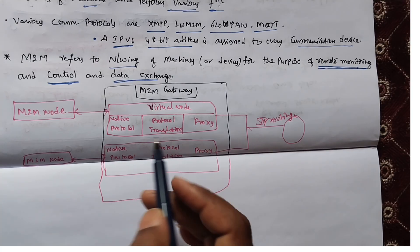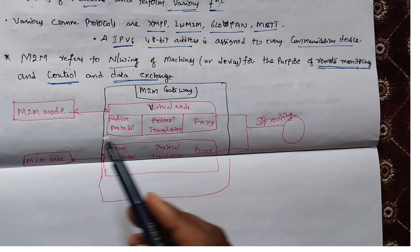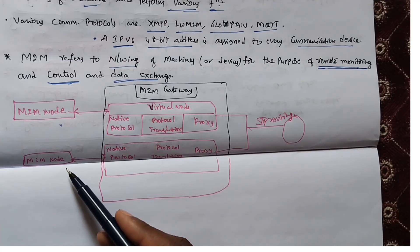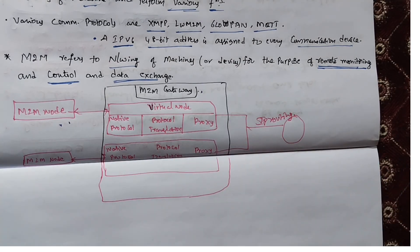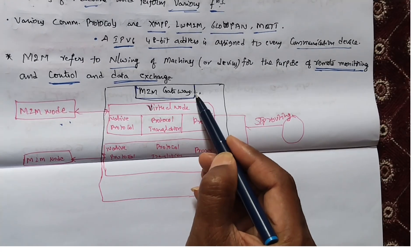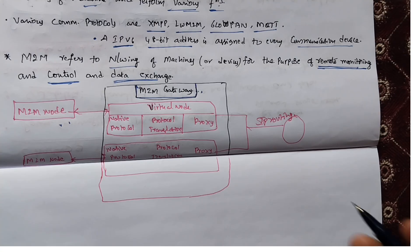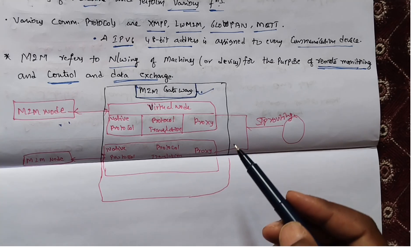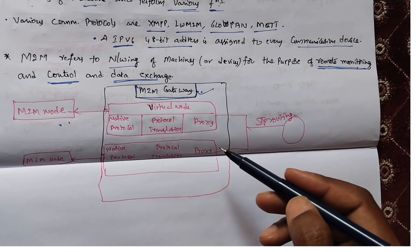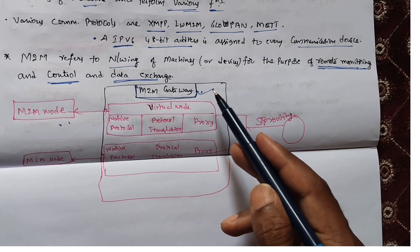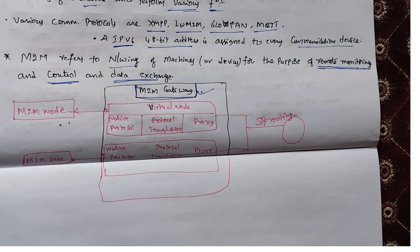The figure shows a block diagram of an M2M gateway. The communication between M2M nodes and the M2M gateway is based on communication protocols which are native to the M2M network. The M2M gateway performs protocol translation to enable IP connectivity.